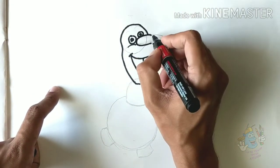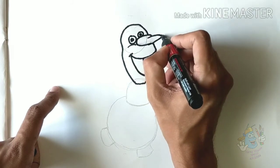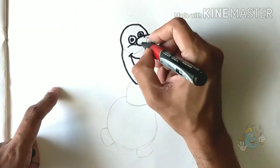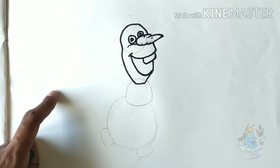Just erase out the nose and add a little curve at the tip. Put little lines for the carrot.